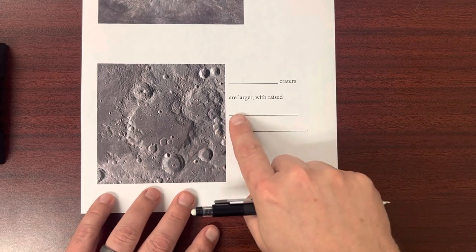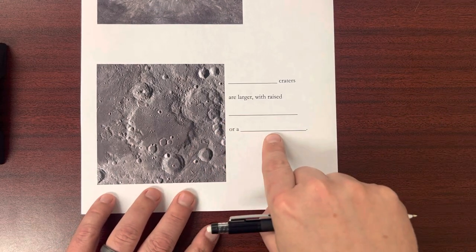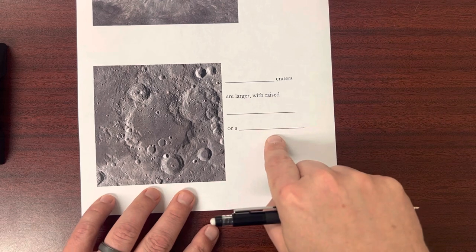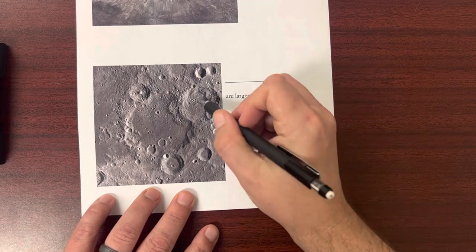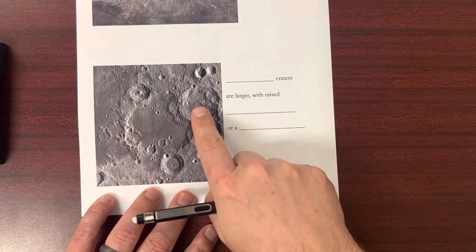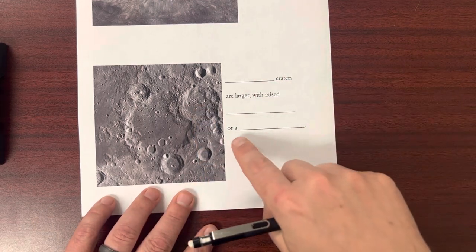So they'll have raised rings or they'll have what's called a central peak. And a central peak, you can kind of see one here. It's a little like mountain in the middle of that crater. And that all has to do with how the impact happened.